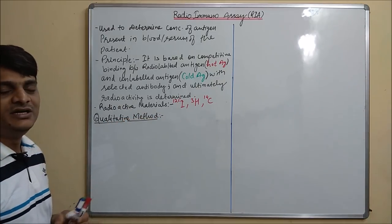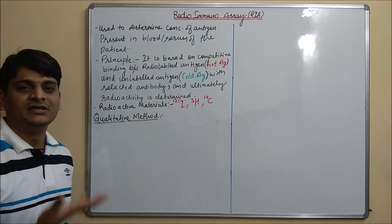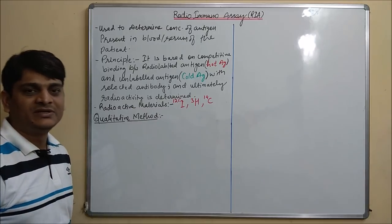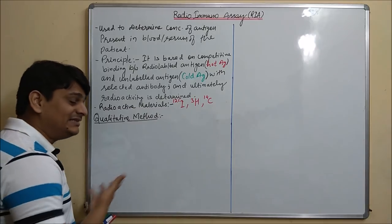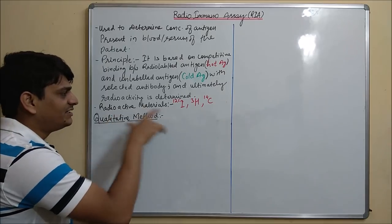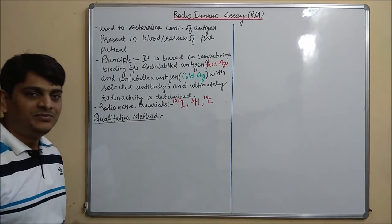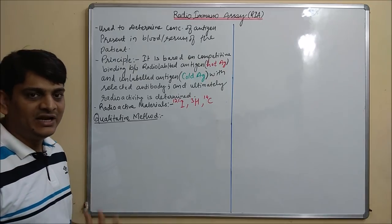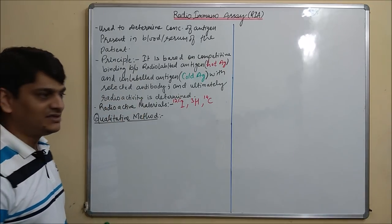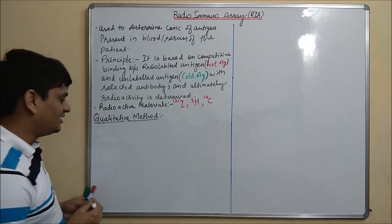In qualitative analysis, first we will take a microtiter plate, and in that microtiter plate a selected antibody will be present. In the first stage we will add radiolabeled antigen, and after that in the second stage we will add cold antigen or unlabeled antigen. Now I am going to illustrate qualitative analysis.